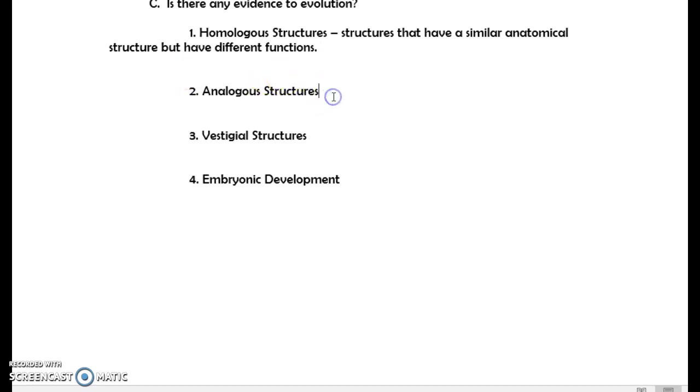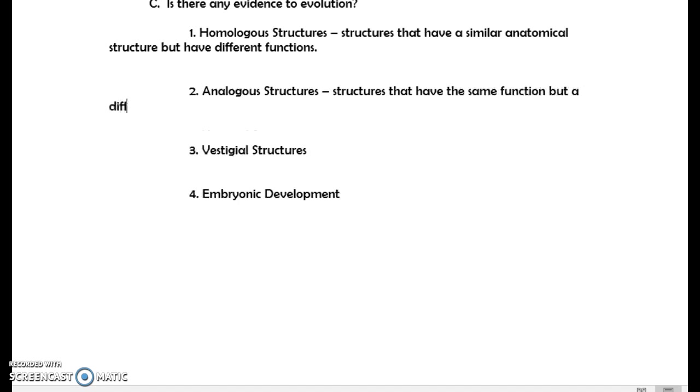Analogous structures, thus very similar framework to the definition, but it's the complete opposite where analogous structures are structures that have the same function, but a different anatomical structure. So it's the reverse. So think of things that you're in your head thinking these two organs or parts do the same thing, but they are clearly not from the same anatomical structure.